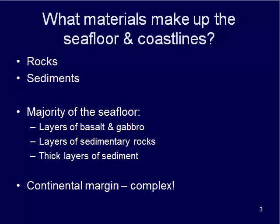The materials that make up the seafloor and coastlines include rocks, solid particles, and sediments — loose bits like sands, gravels, and muds that aren't solidified into actual rock. The majority of the seafloor consists of layers of basalt and gabbro. We'll also see some layers of sedimentary rocks and thick layers of sediment, and we'll discuss what happens along the edges of the continent at the continental margin.